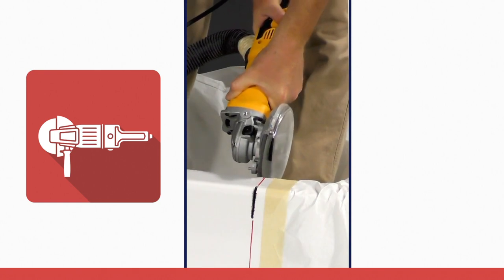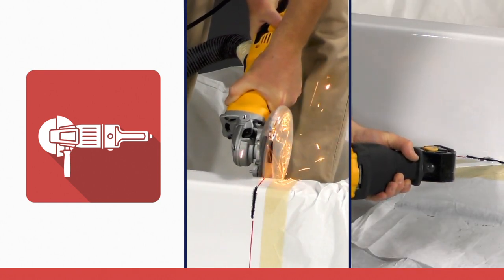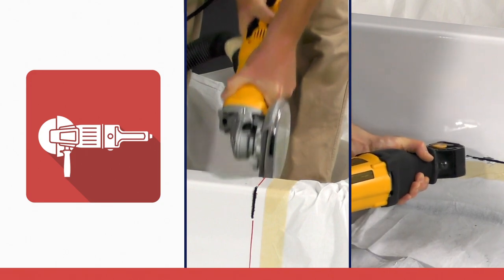On acrylic, fiberglass, or steel tubs, use a side grinder with the diamond blade, such as this one, to make necessary entry points for the reciprocating saw blade.